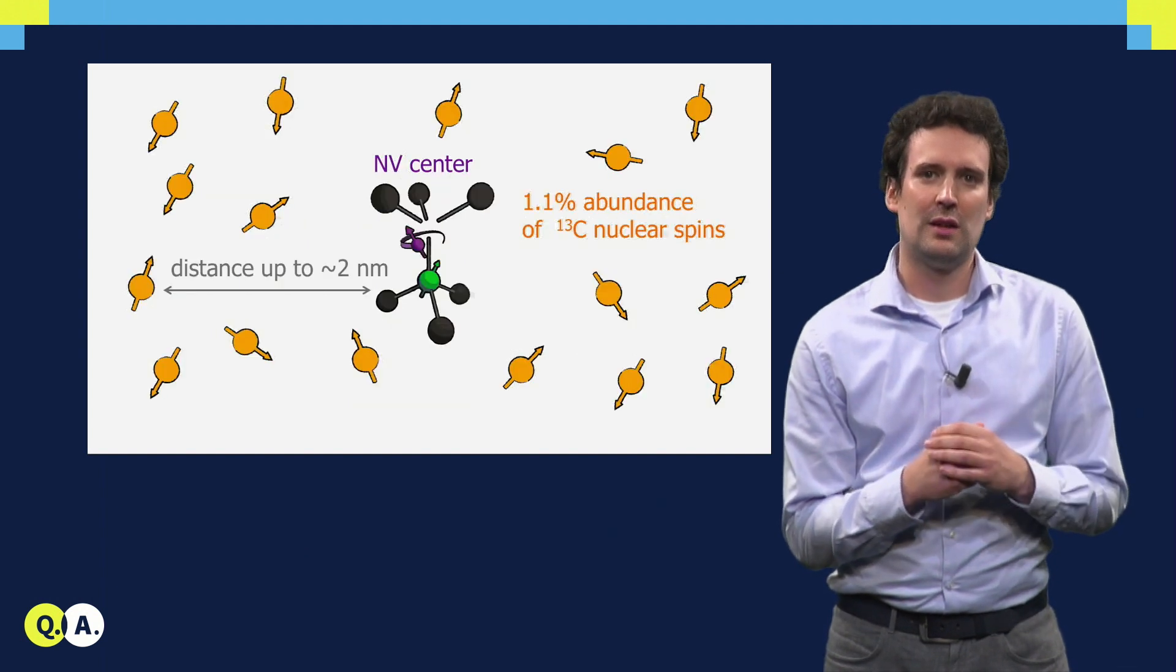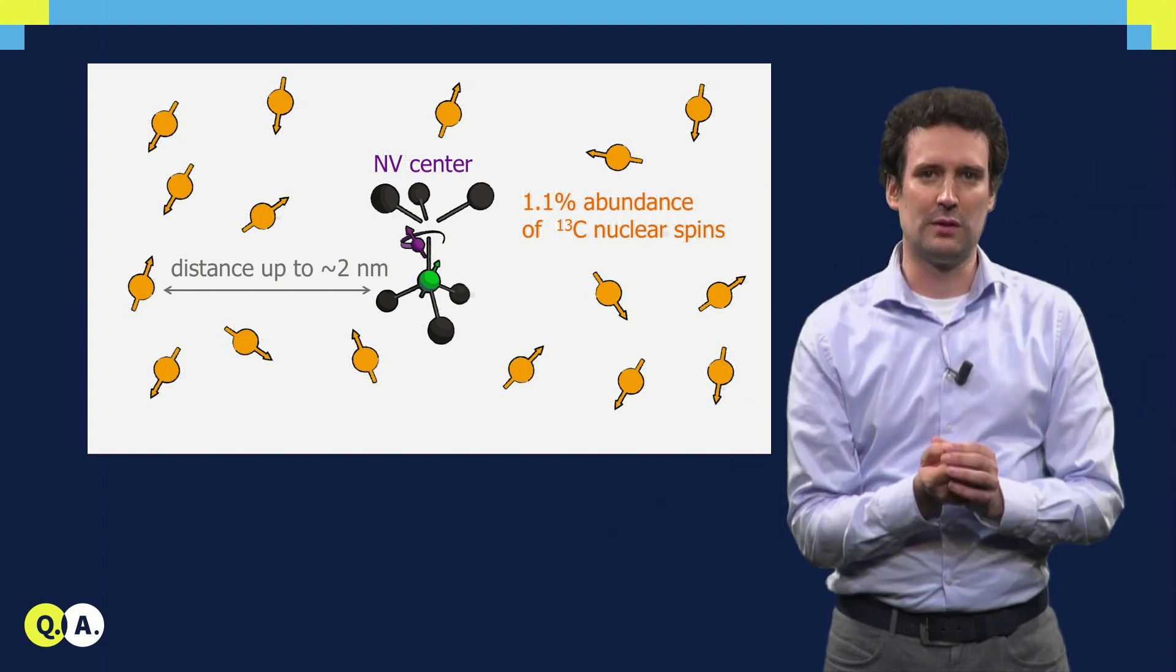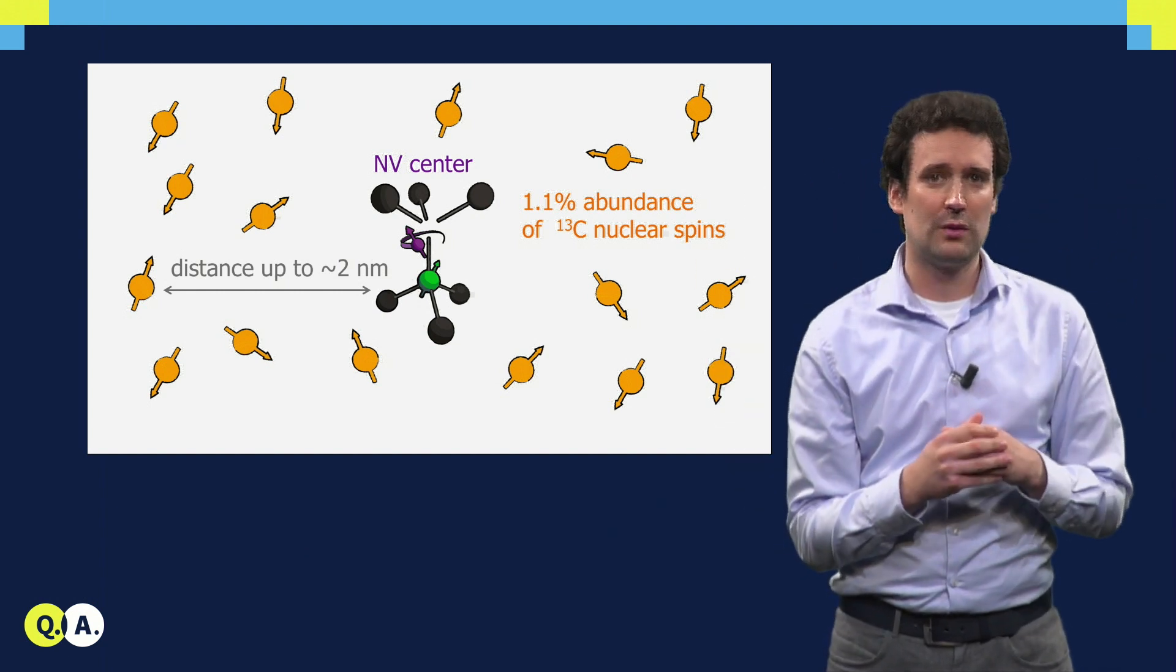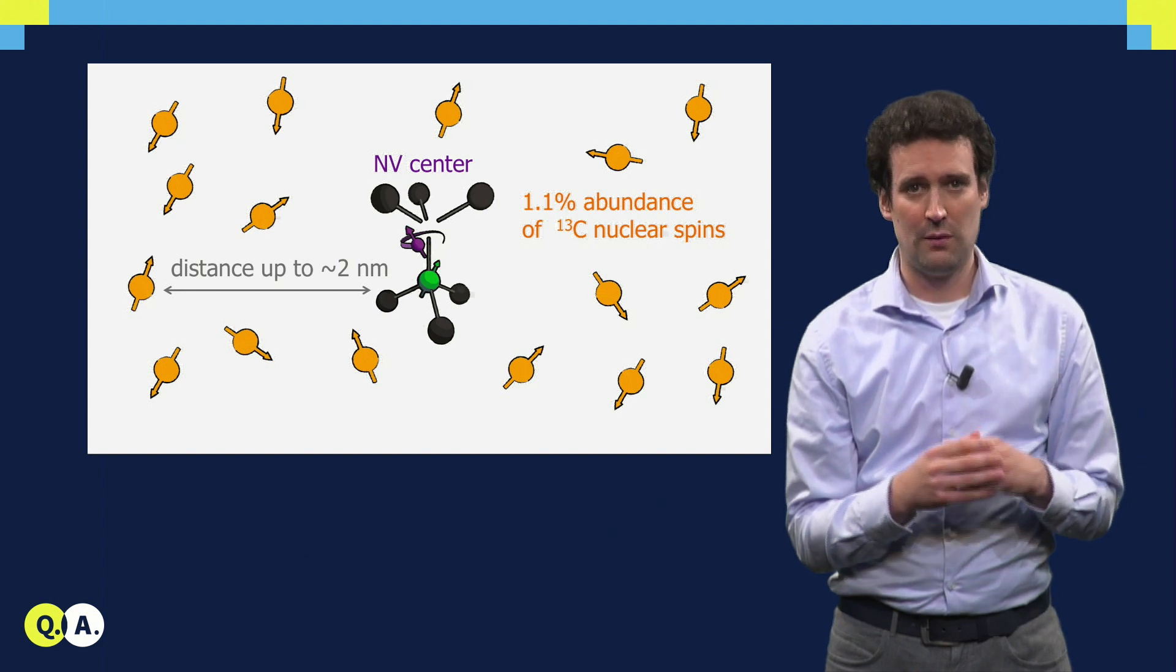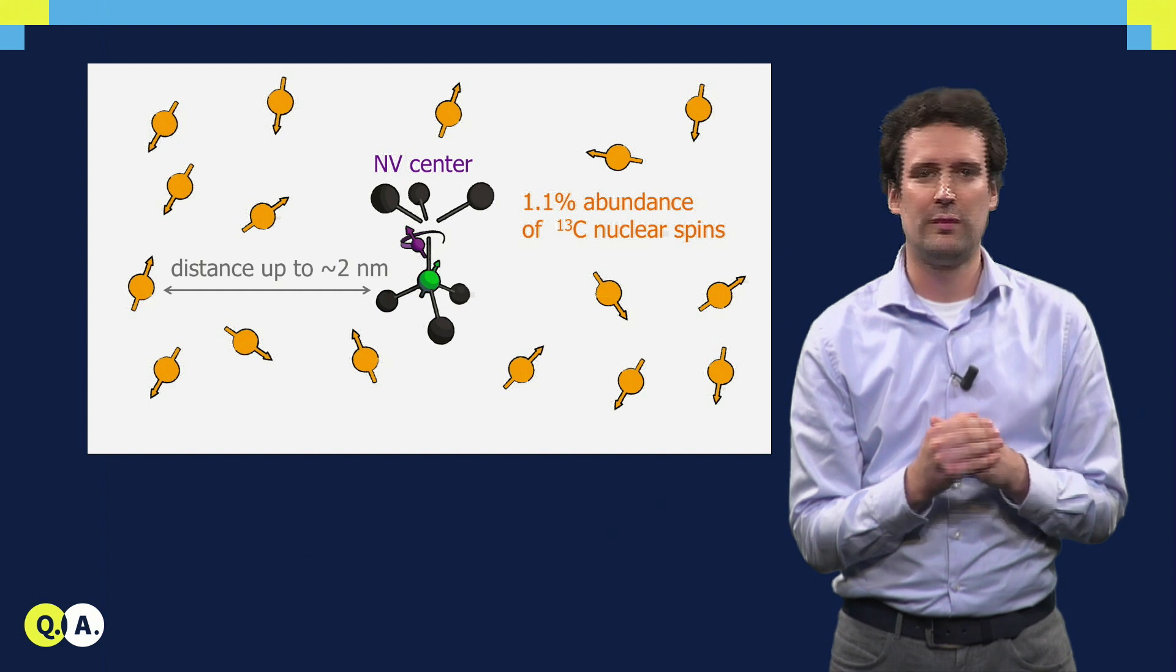The first thing to realize is that this electron spin is surrounded by an entire cloud of nuclear spins. About 1% of the diamond consists of carbon-13, which is a spin half system, and the rest consists of carbon-12, which has no spin.